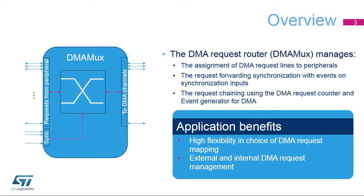The DMA MUX Request Multiplexer allows routing a DMA request line between the STM32H7's peripherals and its DMA controllers. The routing function is ensured by a programmable multi-channel DMA request line multiplexer. Each channel selects a unique DMA request line unconditionally or synchronously with events from its DMA MUX synchronization inputs. The DMA MUX may also be used as a DMA request generator from programmable events on its input trigger signals.